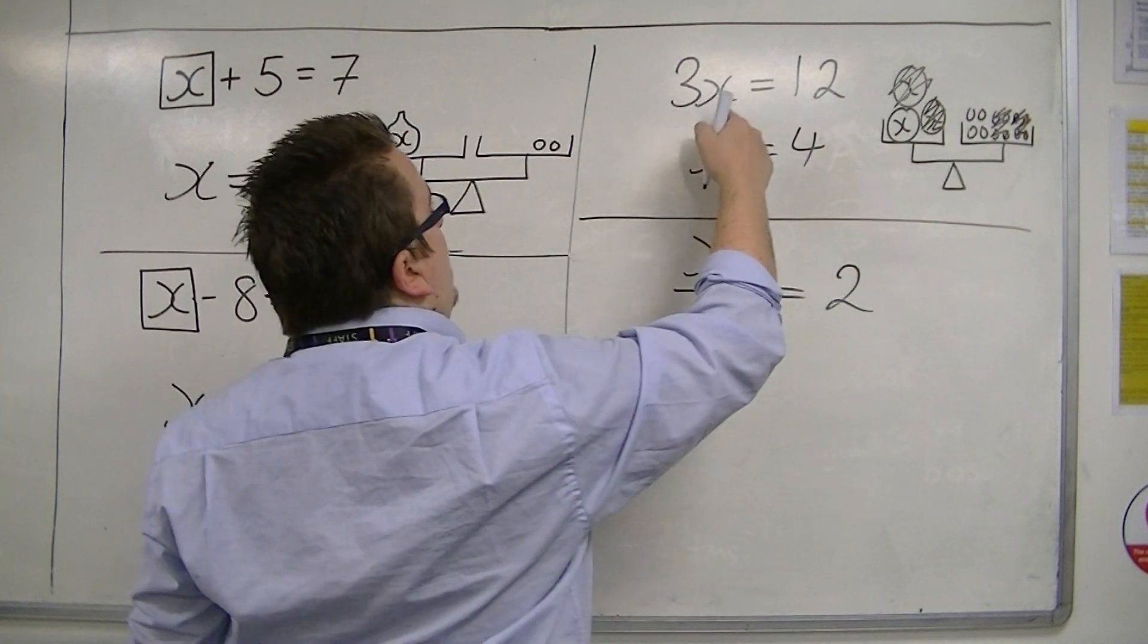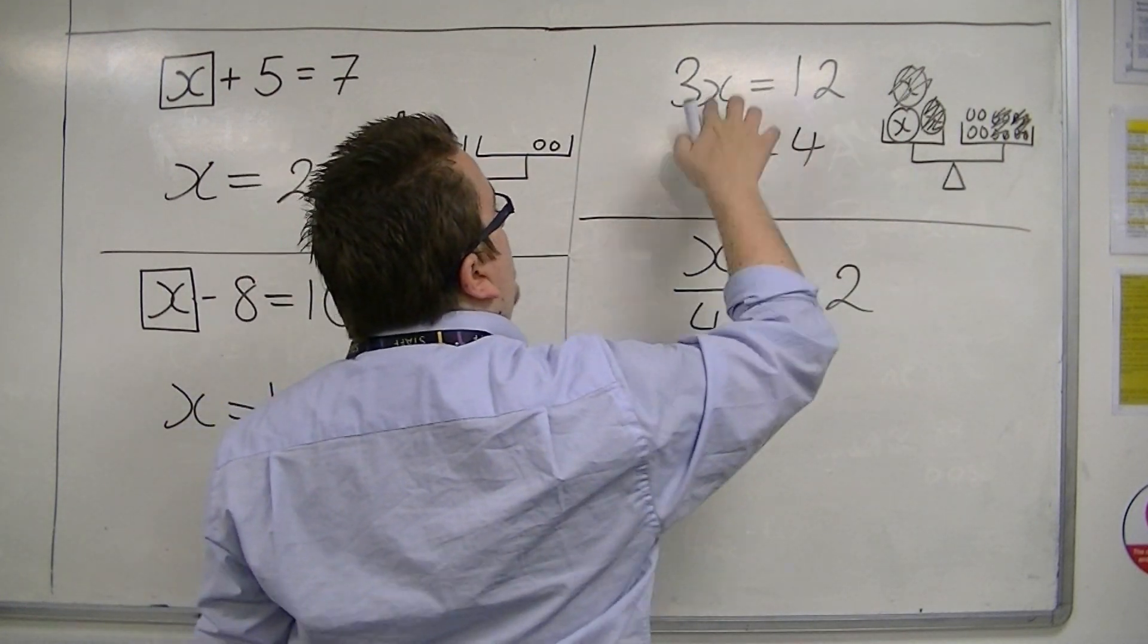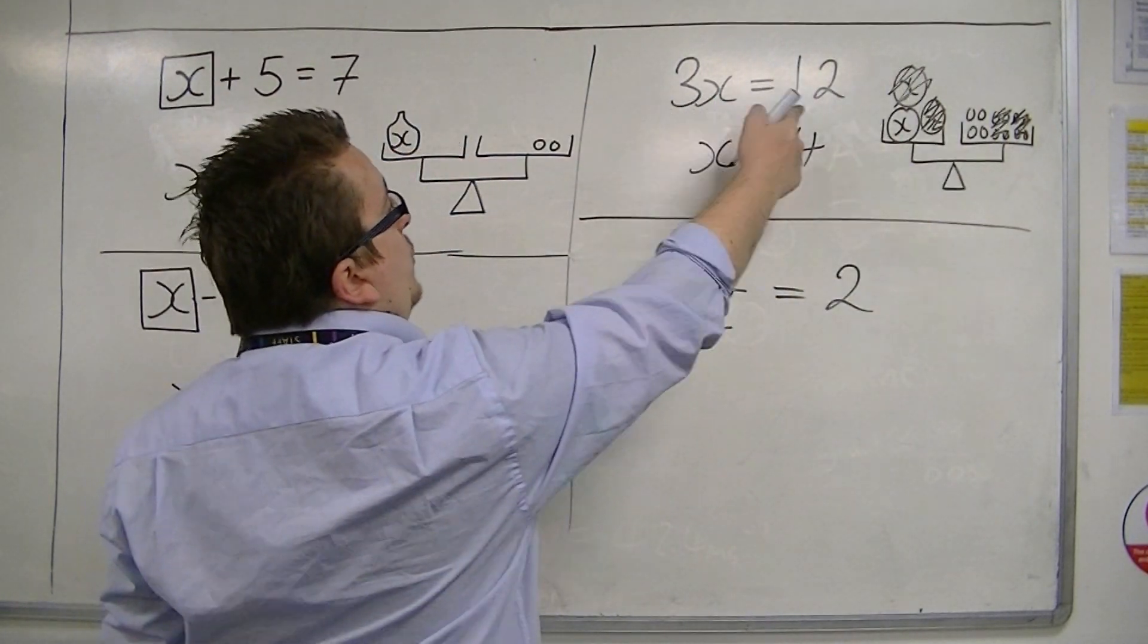So, because we've got three lots of something is twelve, the something must be four. Three fours are twelve.